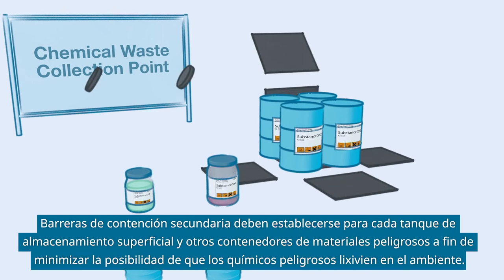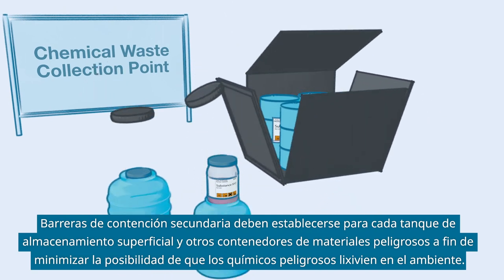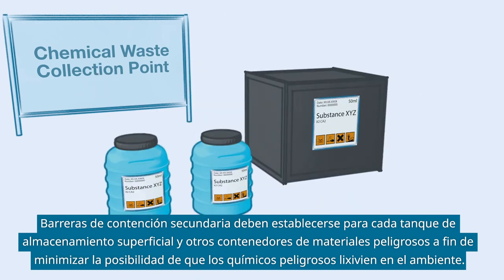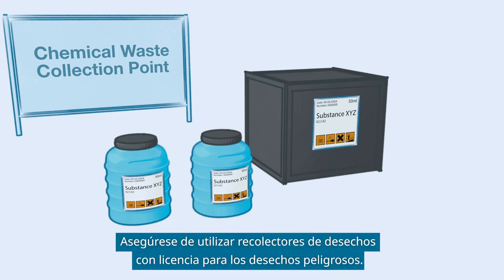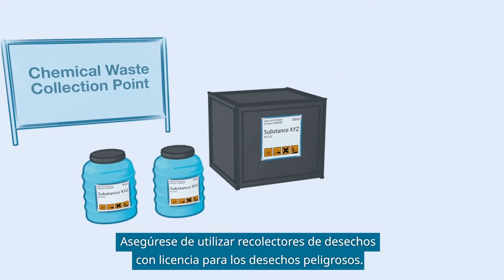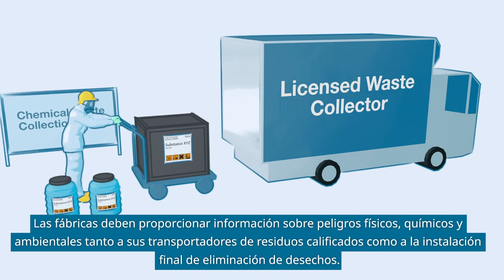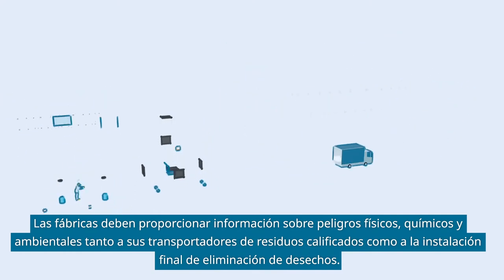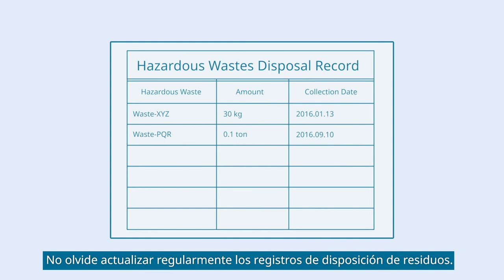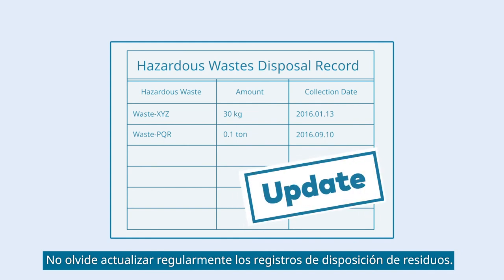Secondary containment should be provided for all above-ground storage tanks and other hazardous material containers, in order to minimize the chance of hazardous chemicals leaching into the environment. Be sure to use licensed waste collectors for these hazardous wastes. Factories must provide physical, chemical, and environmental hazard information to their qualified waste transporters and the final waste disposal facility. Do not forget to regularly update your waste disposal records.